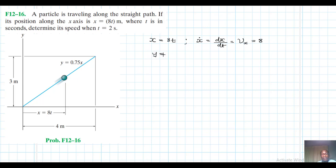And then we have y equal to 0.75x. So if we replace that x there, we have y is equal to 0.75 times 8t, which is equal to 6t. And therefore, we do have y dot, which is vy, equal to 6.